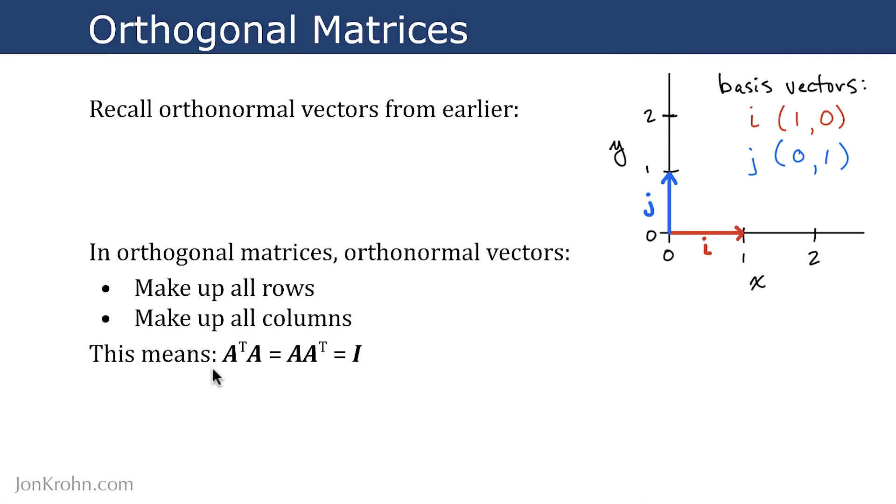Because of this, it means that if we take A transpose A, that's equal to A A transpose, which is not typically the case with any given matrix A. And in either of these two cases, performing this A transpose A or A A transpose matrix multiplication will result in an identity matrix. And you can prove that to yourself on your own time, either with paper and pencil or in a hands-on code demo.